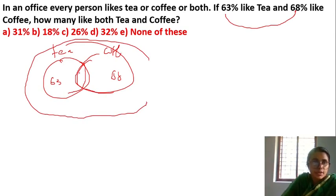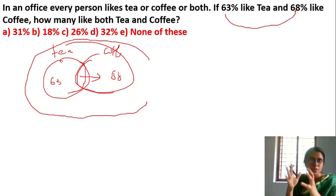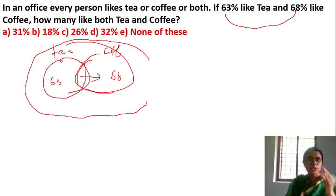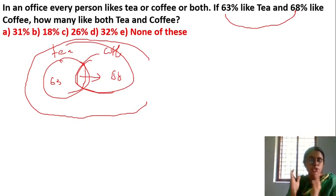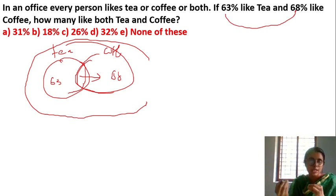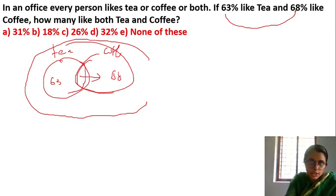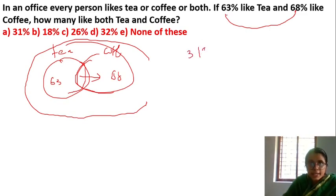The extra amount — both — equals 63 plus 68 minus 100, which gives 31%. So the answer is 31%.